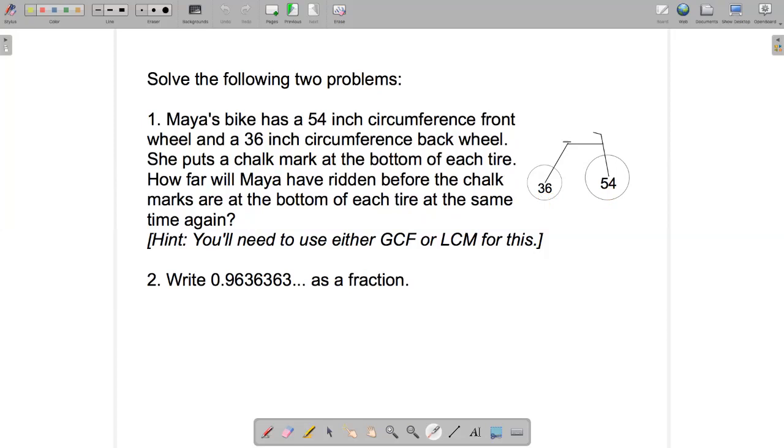Second problem it's a little more straightforward to think about but maybe a little more challenging to solve. Write this number as a fraction. So this is 0.9636363. Okay it's the 63 part that keeps repeating. Write that number as a fraction.